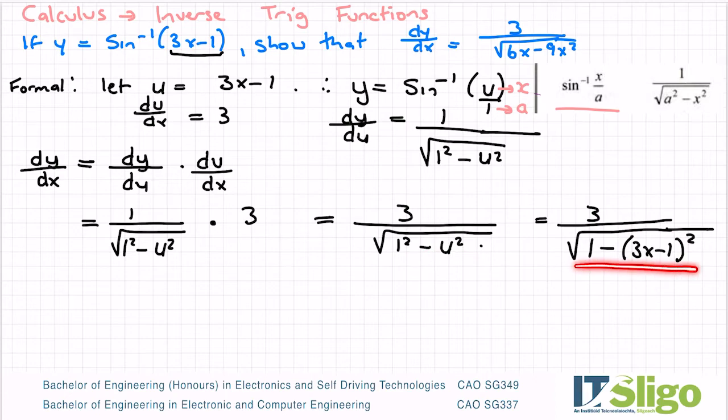So what I'm going to do now is work out what's underneath that square root sign, so that I end up with 3 over the square root of 1 minus, so 3 squared. If you want, I can write it like that, just in case anybody doesn't see what I'm doing. So I'm just squaring out that bracket.